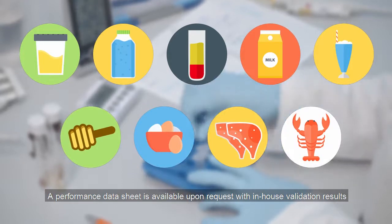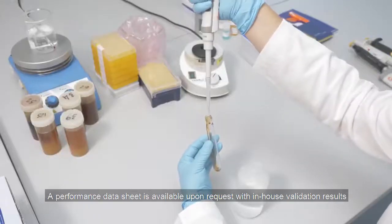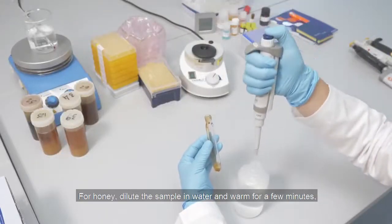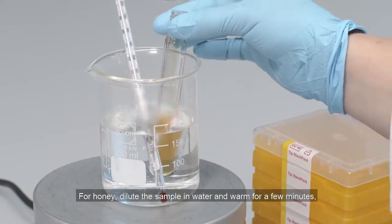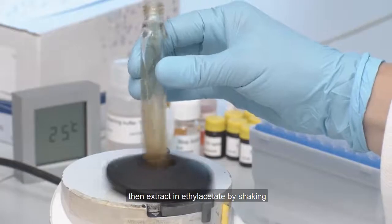For honey, dilute the sample in water and warm for a few minutes, then extract in ethyl acetate by shaking.